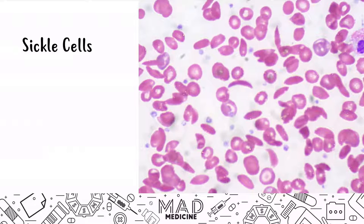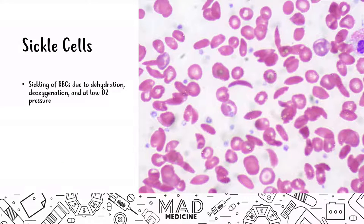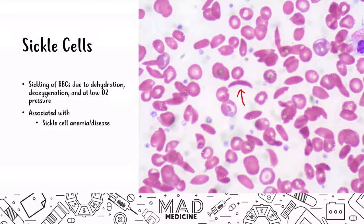Sickle cells occur due to sickling of the RBCs due to dehydration, deoxygenation, or low levels of O2. This is associated with sickle cell anemia and sickle cell disease. Keep in mind this sickling can return back to normal when a patient is properly hydrated, has normal O2 levels, or is at a normal O2 pressure with proper O2 perfusion.